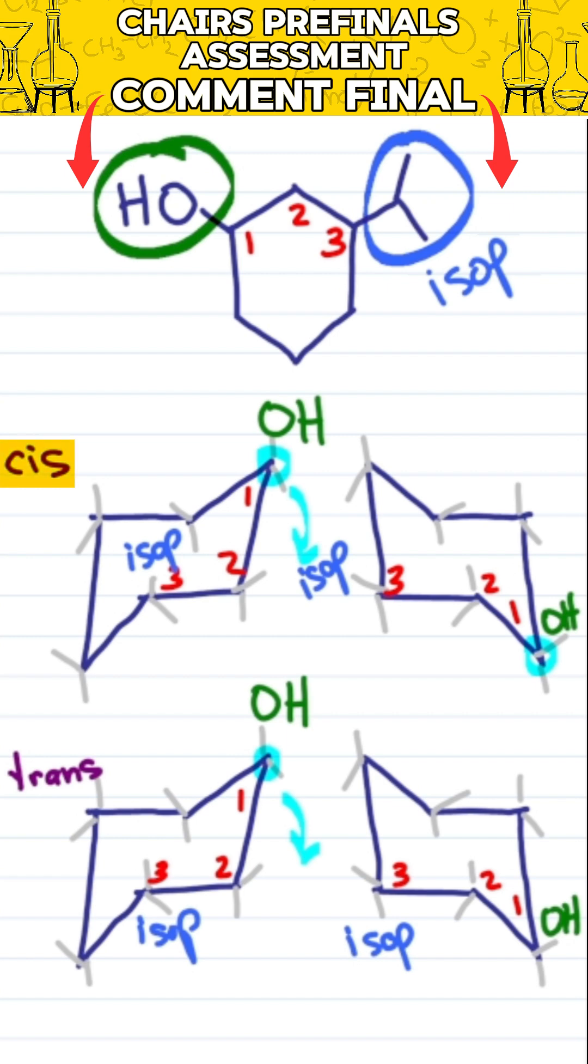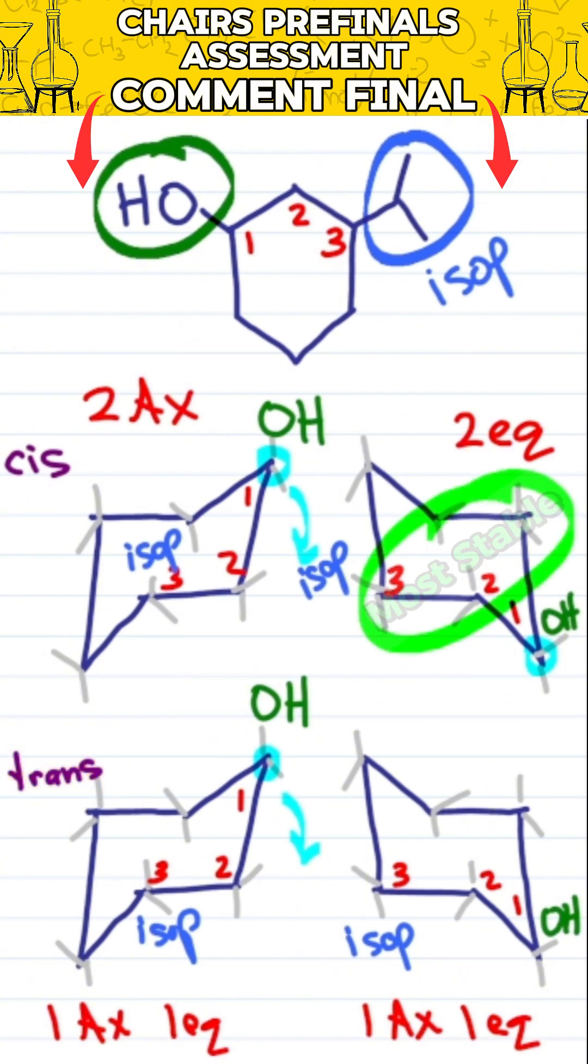For stability, cis gives us two axial and two equatorial. Trans gives us one each axial and equatorial. Two equatorial makes this most stable.